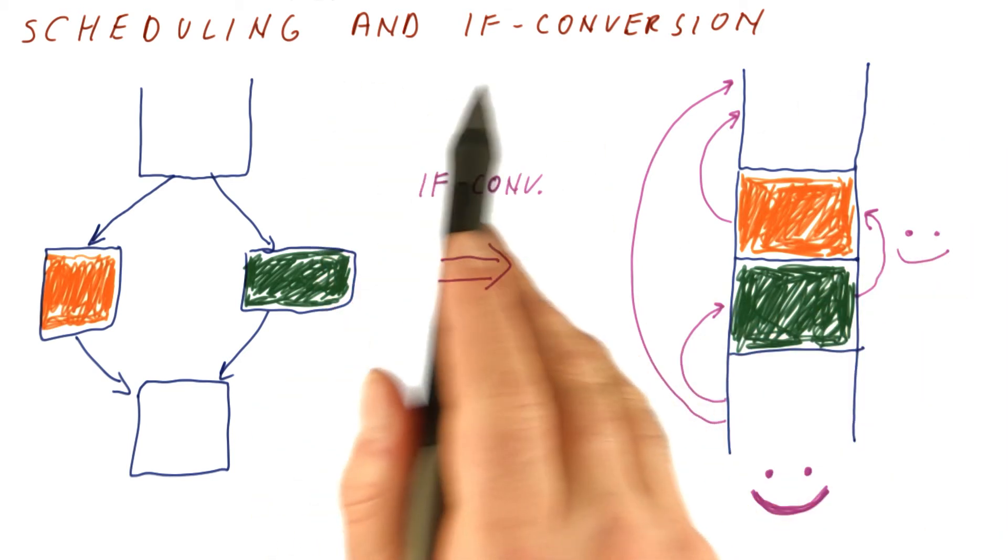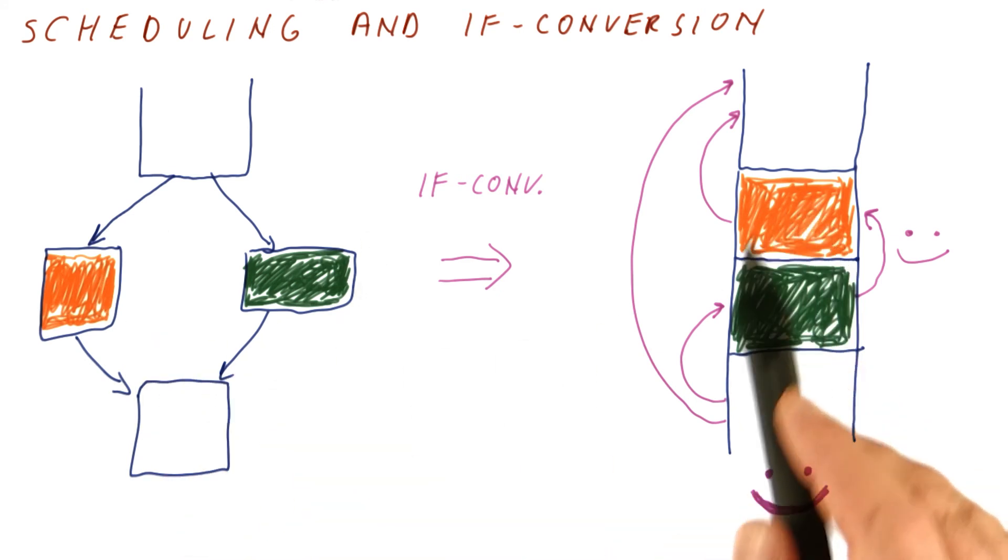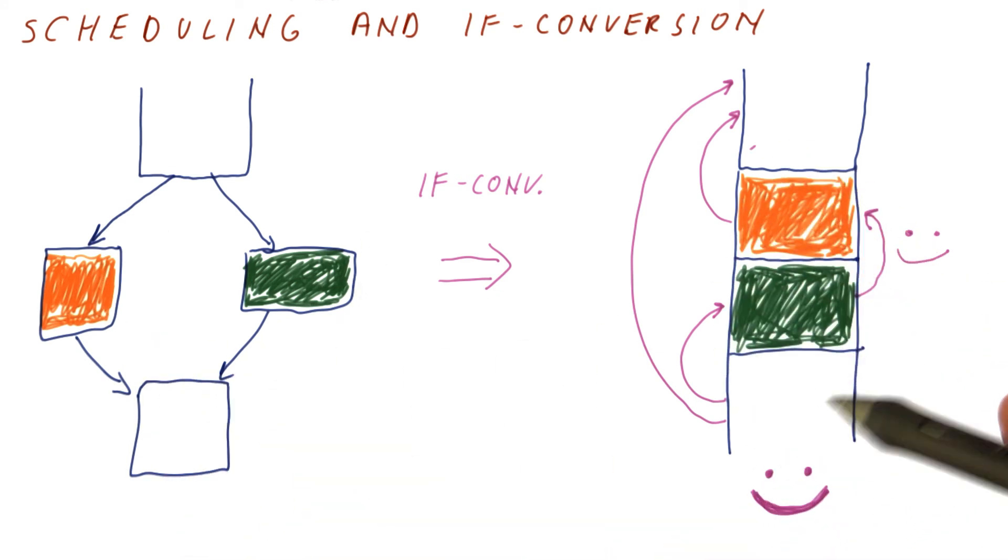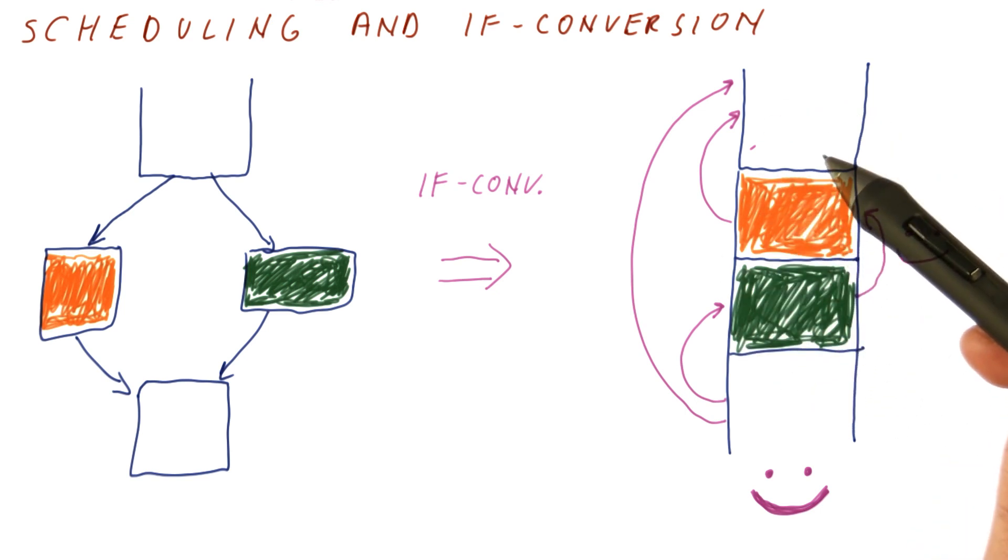So if-conversion is one of those things that helps with branch prediction because you avoid branches, and it also can tremendously help the compiler in making a better schedule for a processor.